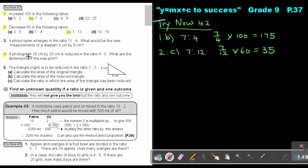Okay, let's look at number 4. A photograph 26 by 20 is reduced in the ratio of 4 to 3. What are the dimensions of the new print? So basically, I must reduce 26 in the ratio of 4 to 3 and I must reduce 20 in the ratio of 4 to 3.